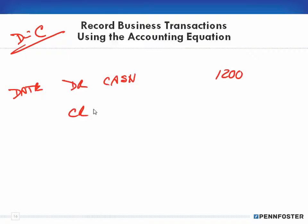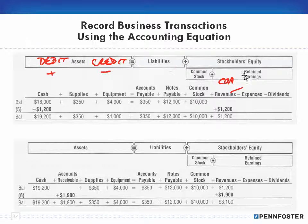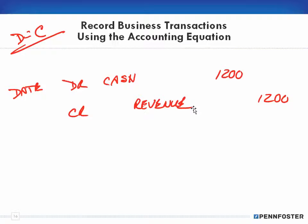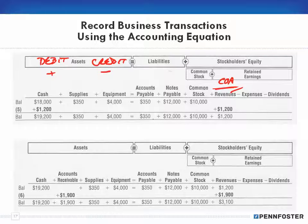Since debits have to equal credits, I need to credit something else. I'll use one of my revenue accounts — in this case we'll just call it Revenue. I'm going to automatically credit that revenue account for $1,200, backing into that account. That makes my debits equal my credits and gives me the proper journal entry.